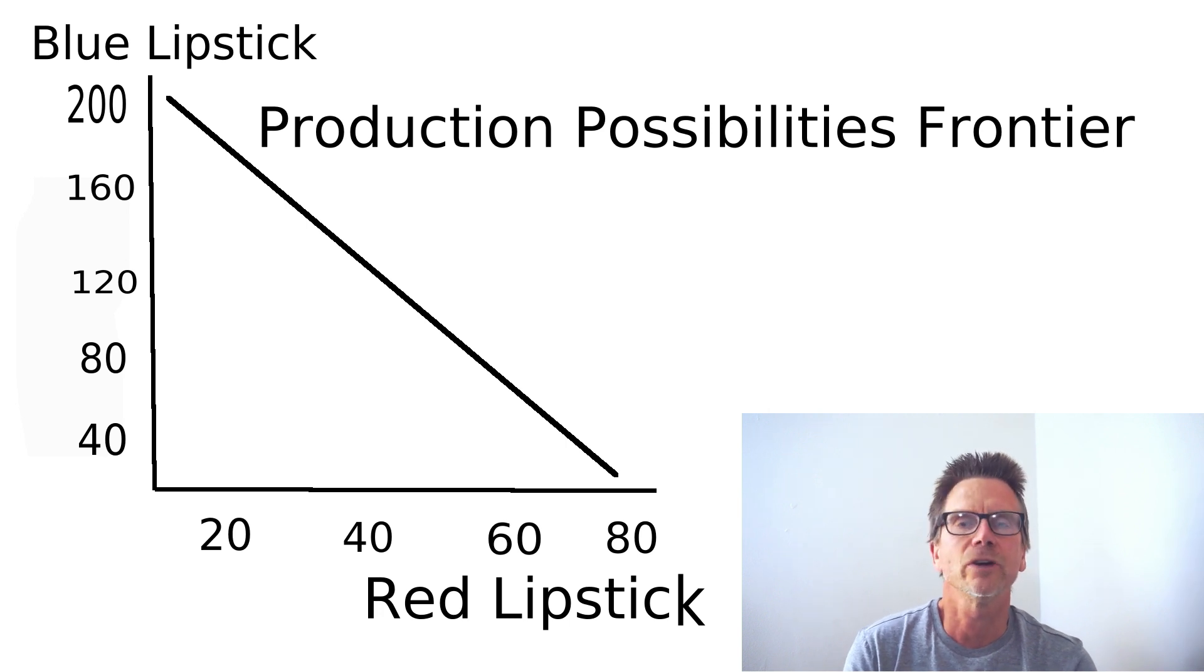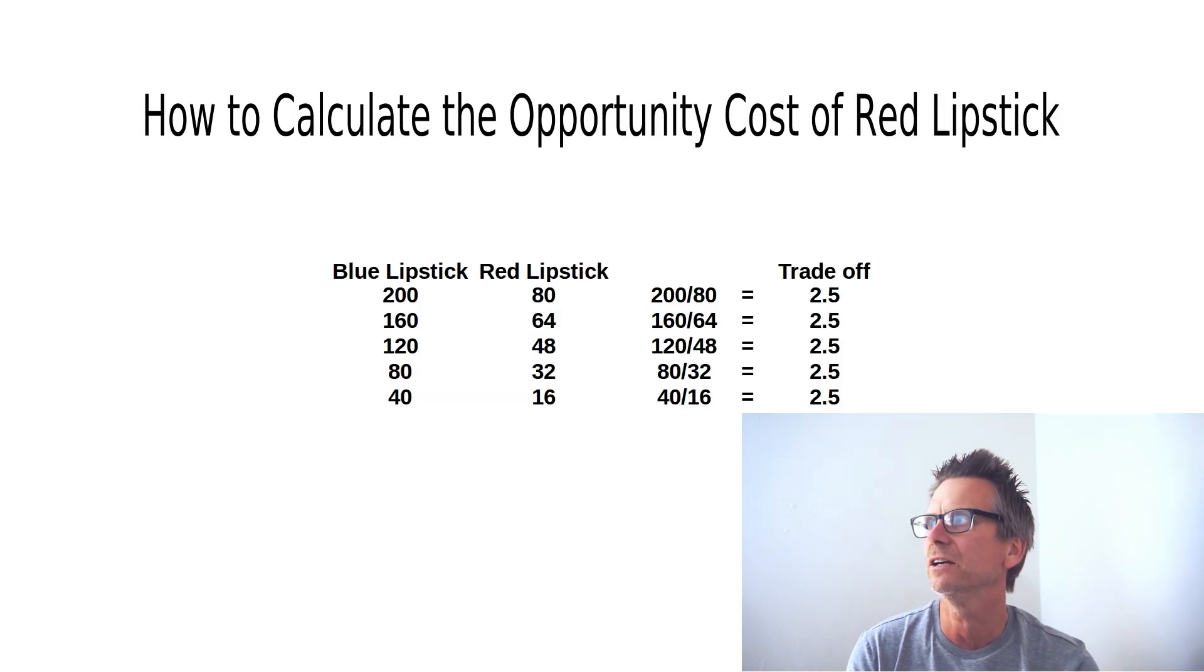You look at the graph and then you extract this data the best you can. My graph didn't have actually points. I just drew the line, but you can at least use it from the 80 to 200. You have to read the question because the question is going to ask you how to calculate the opportunity cost of red lipstick. So the one that you're calculating it of is on the bottom of the equation.